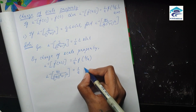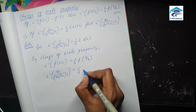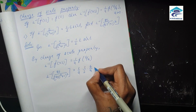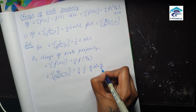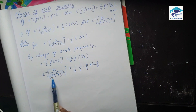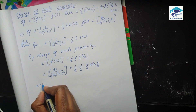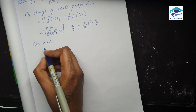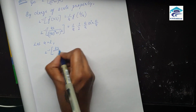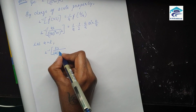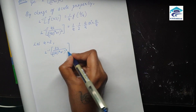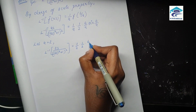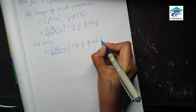This becomes 1 by a times 1 by 2 times t by a times sin(t by a). Looking at the problem, a has to be 2 in order to get (2s)² = 4s². Substituting a = 2: L inverse of 2s by (2s)² + 1)² equals 1 by 2 times 1 by 2 times t by 2 times sin(t by 2).